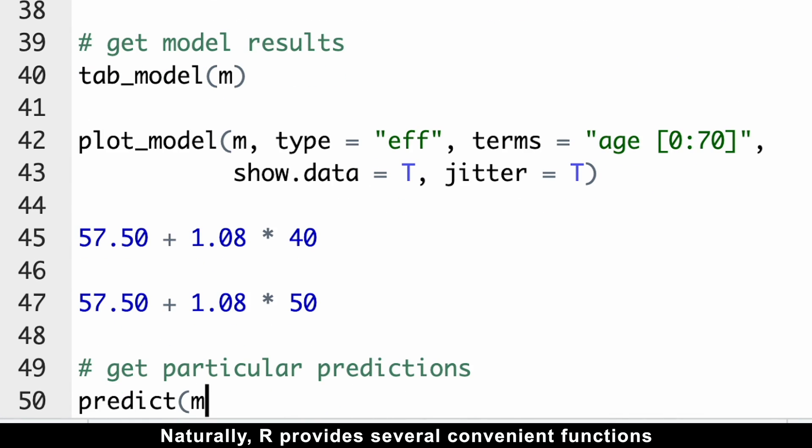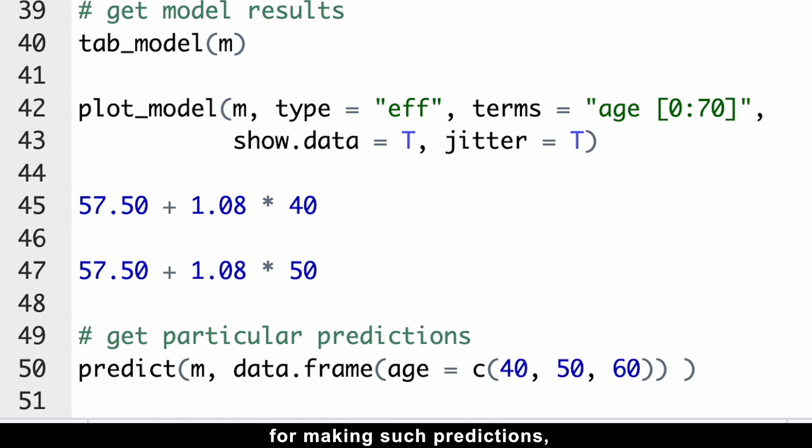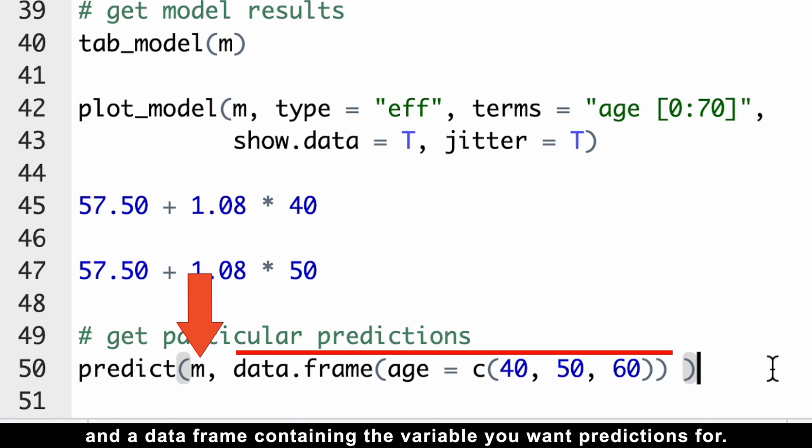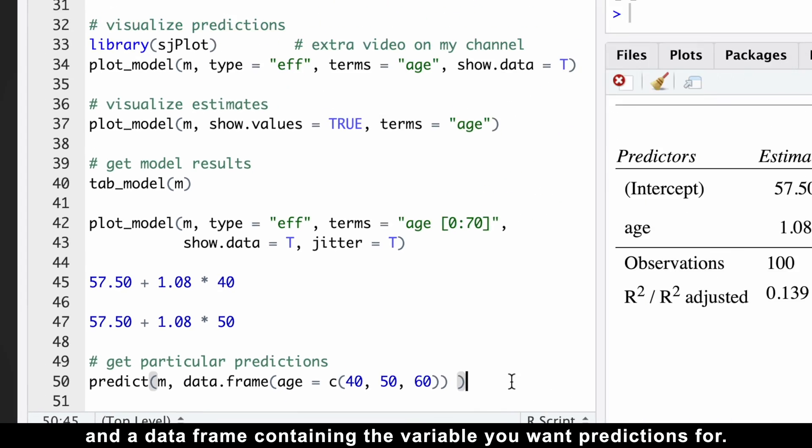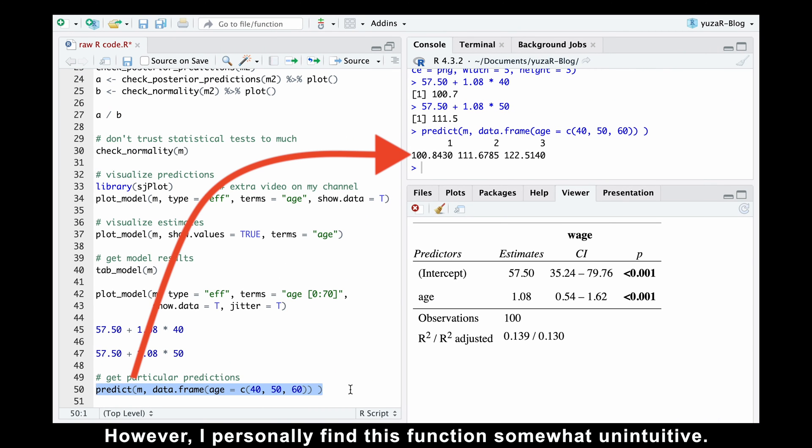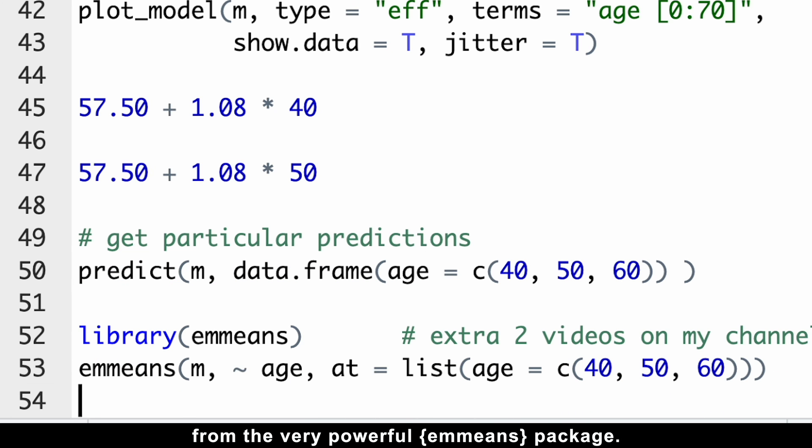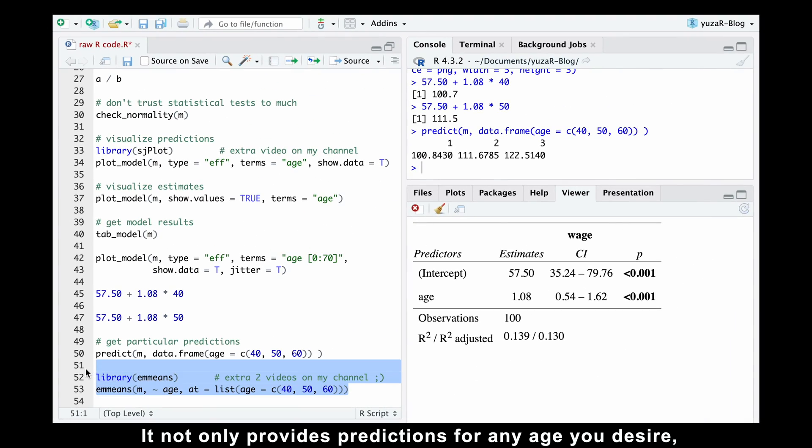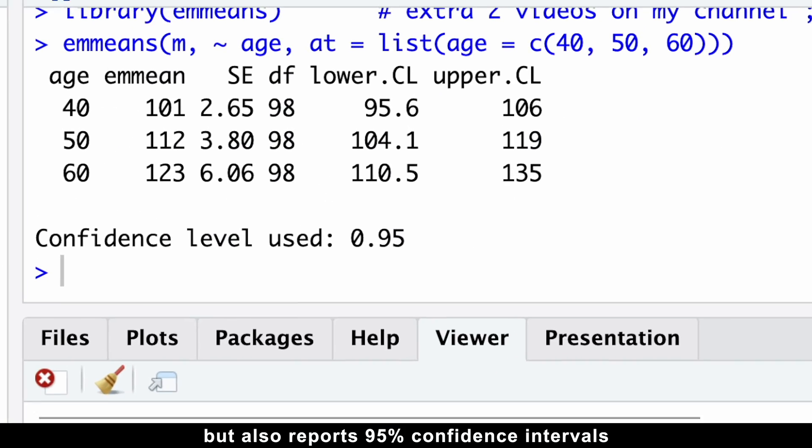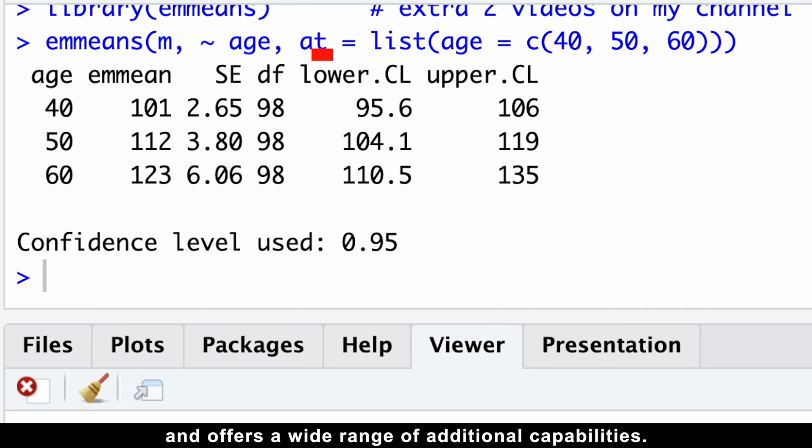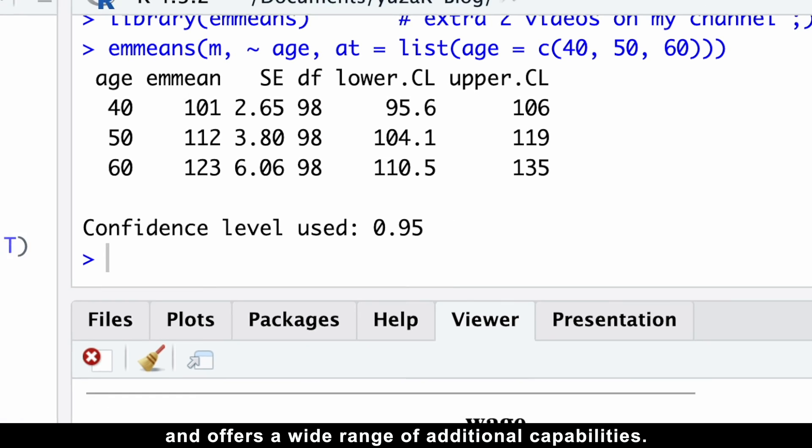Naturally, R provides several convenient functions for making such predictions, the most well-known being the predict function. This function allows you to input your model and the data frame containing the variable you want predictions for. However, I personally find this function somewhat unintuitive. A much better choice is the emmeans function from the very powerful emmeans package. It not only produces predictions for any age you desire, but also reports the 95% confidence intervals and offers a wide range of additional capabilities.